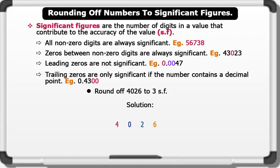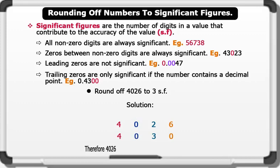Let's see an example: round off 4026 to three significant figures. Solution: we identify the target by counting three digits from left to right, which gives us 2. The digit after the target is 6, which is greater than five, so we round up and add one to the target, making it 3. The digit after the target is replaced with zero, and digits before the target are kept the same. Therefore, 4026 rounded off to three significant figures gives us 4030.